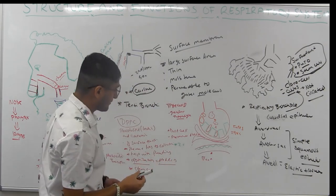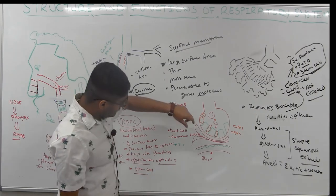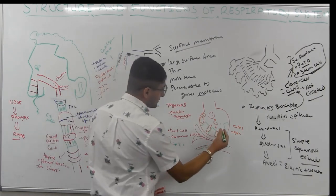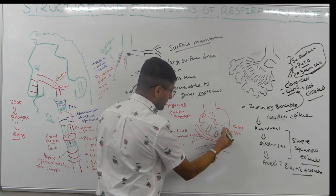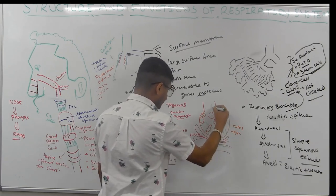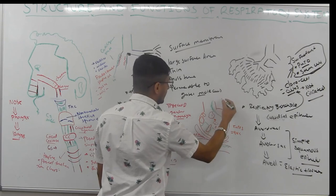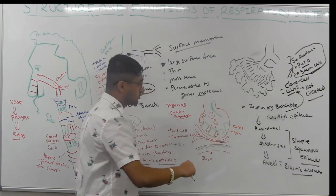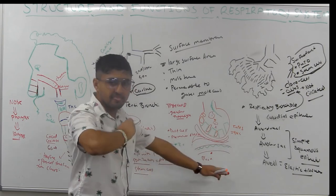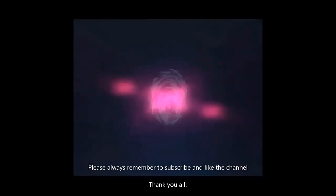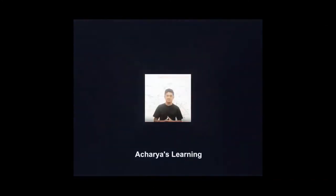There are mucous cells that produce mucus, which gets propelled out to the bronchi via the mucociliary transport and may eventually be sent to the intestines.